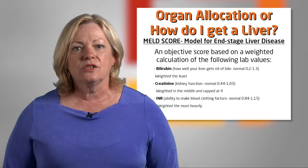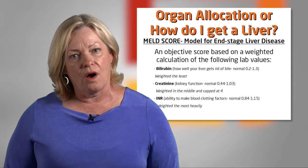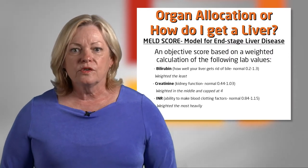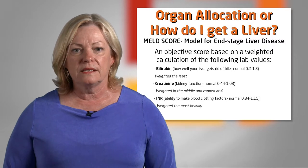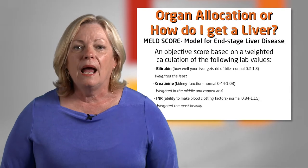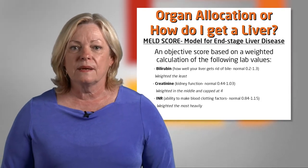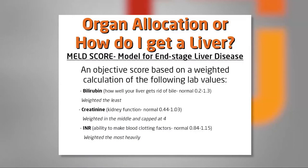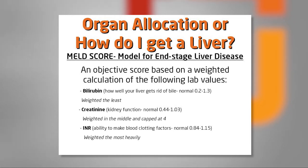Now we're going to talk about how you get a liver offer. Liver offers are based on an allocation system developed by UNOS — the United Network for Organ Sharing. The allocation system is based on something called a MELD score — Model for End-Stage Liver Disease. It's an extremely objective calculation based on three lab values: your total bilirubin, which reflects how well your liver gets rid of bile; your creatinine, which shows how well your kidneys work; and your INR, which reflects how well your liver is making blood clotting factors.